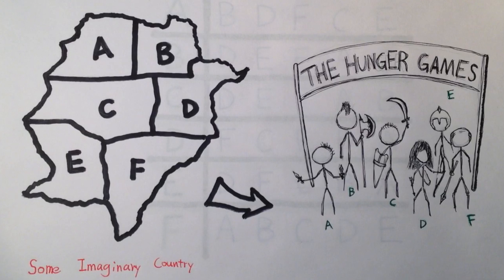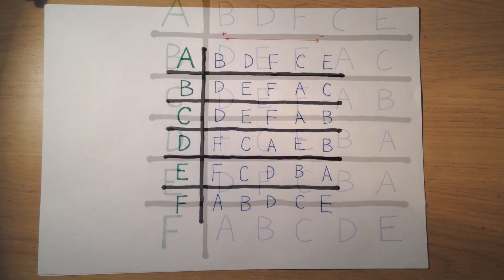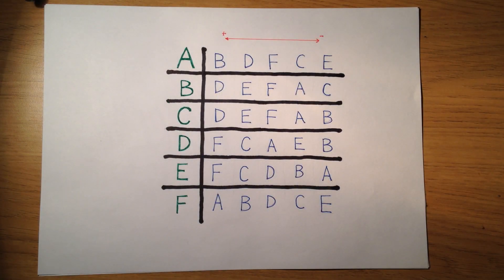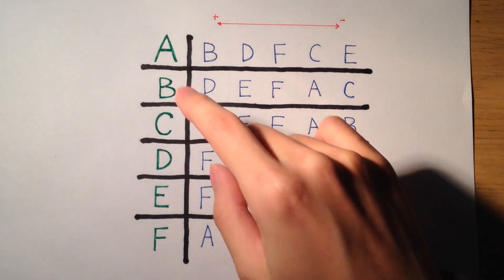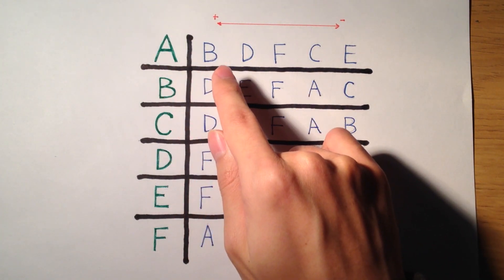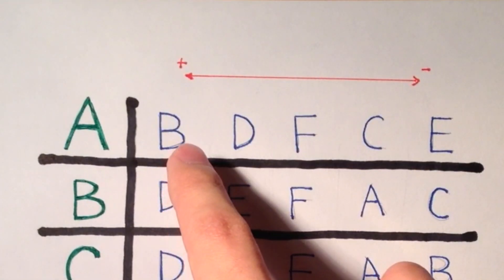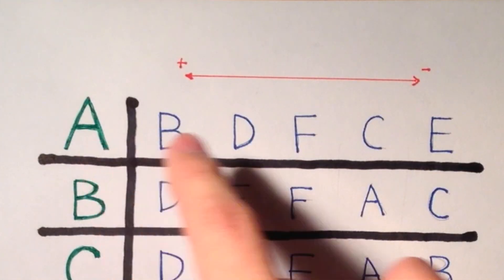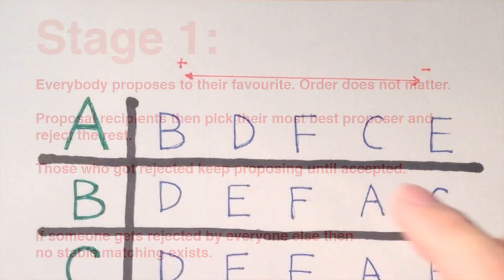Now I'll have my assistant take over to go through an example in detail. Assuming that we've gathered preference rankings from each participant, we can write this table with the names on the left in green, and their corresponding preference ranking on the right in blue in decreasing order. For example, B will be the most preferred partner of A, and E will be the least preferred partner of A.